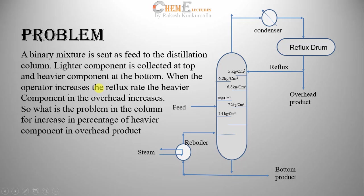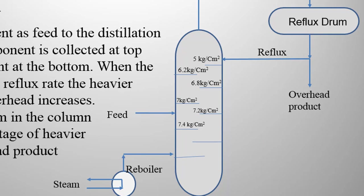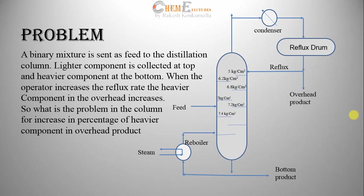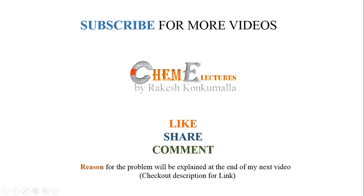This is the detailed explanation of flooding and its occurrence. Now let's do one problem: a binary mixture is sent as feed to a distillation column. The lighter component is collected at the top and the heavier component at the bottom. When the operator increases the reflux rate, the heavier component in the overhead increases. What is the problem in the column? Recall the concepts explained in this lecture. The solution will be explained at the end of my next video. Thanks for watching, and post your views or doubts in the comment section.